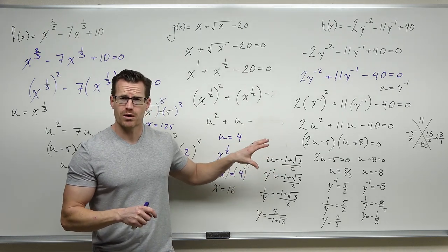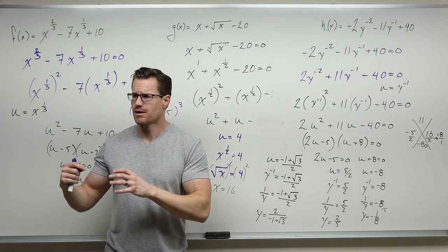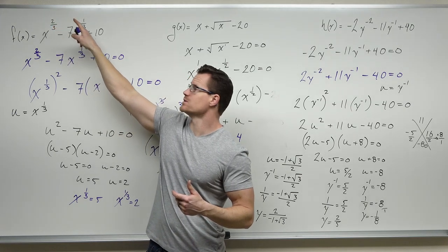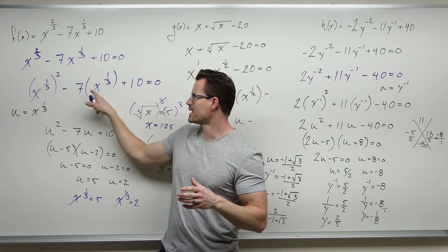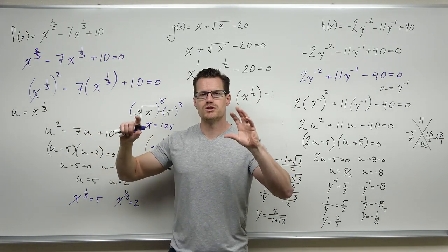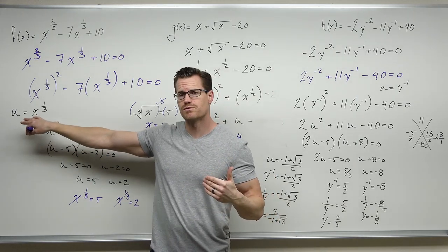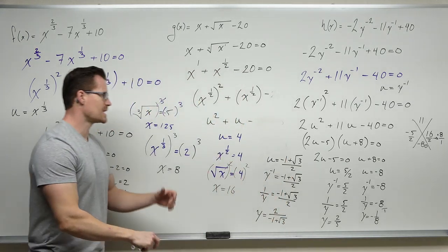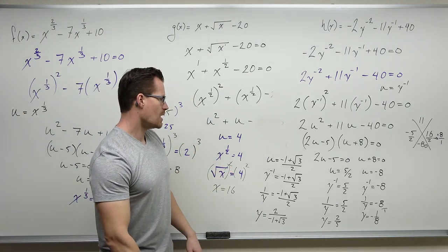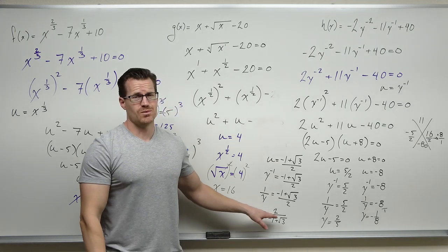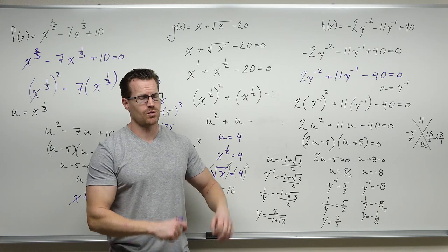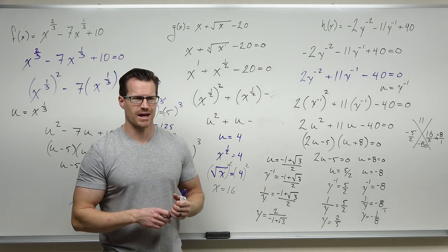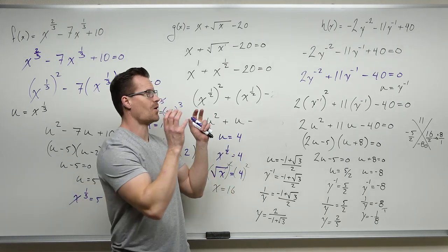In general, you don't deal with the non-factorable case very often, but this technique is robust — not limited. It's specific: you need three terms, the first exponent must be two times the second, and you substitute the same expression appearing in both terms with a dummy variable. Then hopefully factor, or use the quadratic formula, get down to the dummy variable, and undo the substitution to solve for the original variable — taking both sides to a power, watching out for negatives with even roots, using reciprocals for negative exponents, and rationalizing if needed.